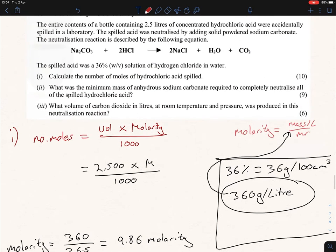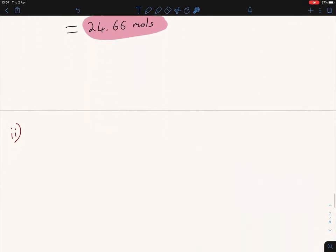I think that's the hardest part. The next question reads: what is the minimum mass of anhydrous sodium carbonate required to neutralize the spilled HCl? Write out your formula. If number of moles equals mass over Mr, therefore mass equals number of moles times the Mr.